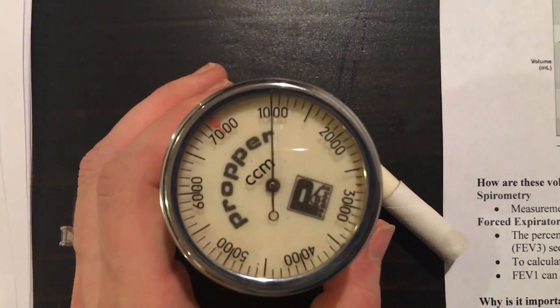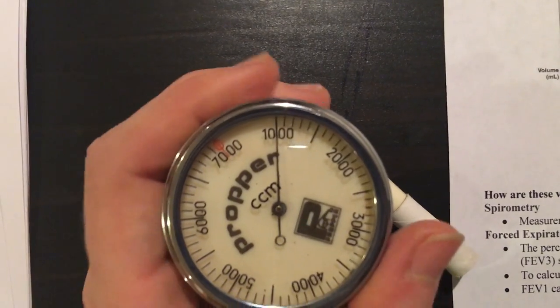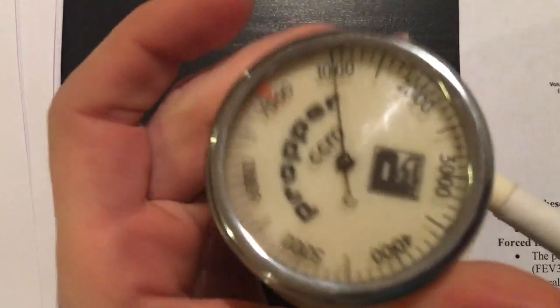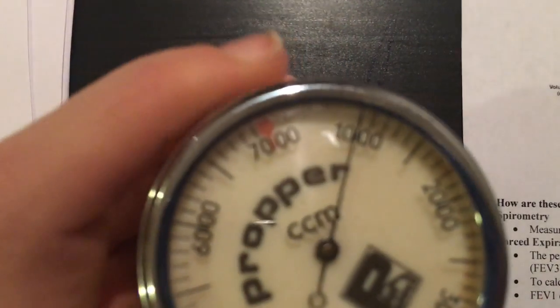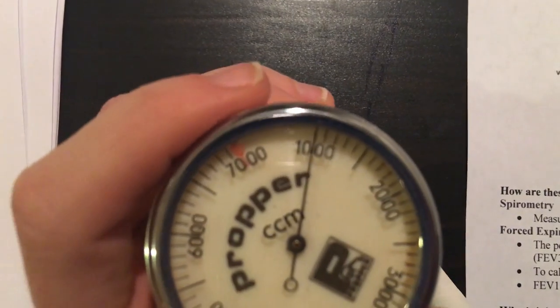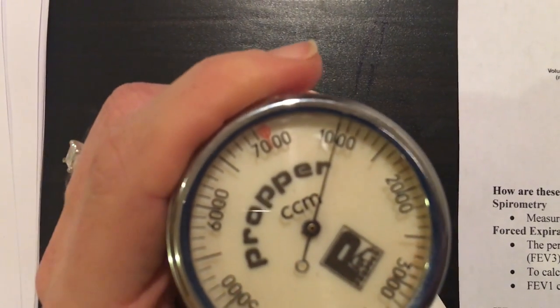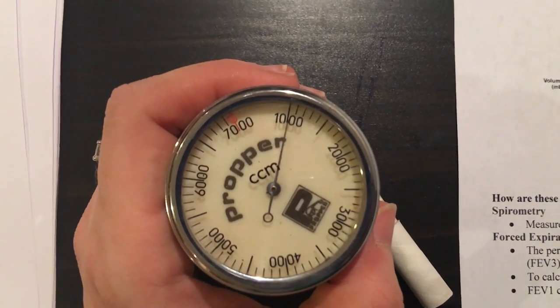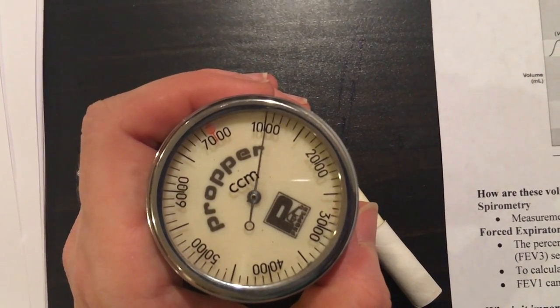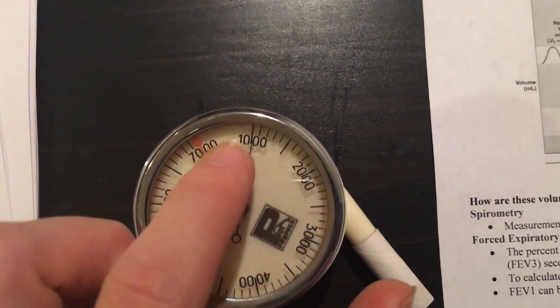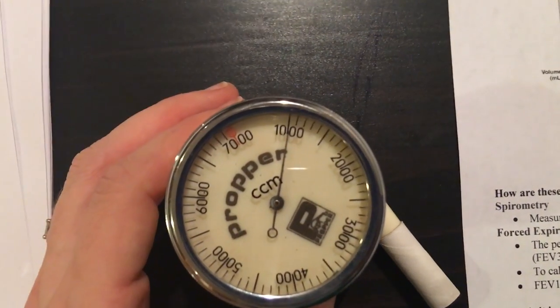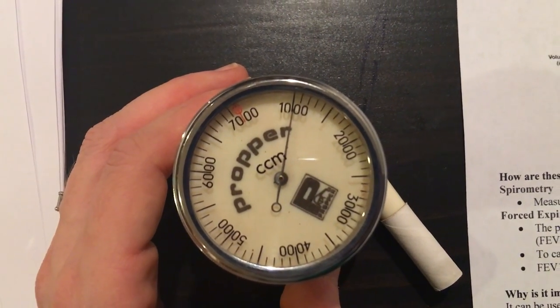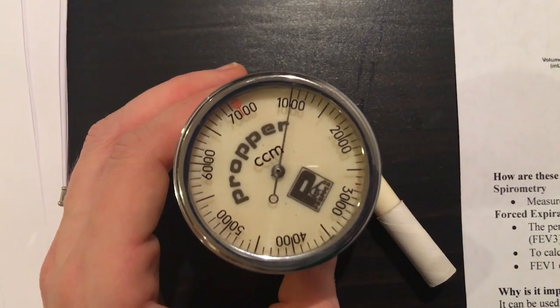I've set it to the dial so you can turn this to set it to zero. I've set it to 1000 to start because we're going to do tidal volume and tidal volume is a small number. There's no dash marks here, and this spirometer is probably not sensitive enough to get an accurate tidal volume, but we're going to do it anyway and see what we get.